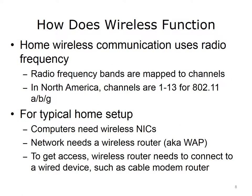How does wireless communication happen? Home wireless communication uses radio frequency. Wireless equipment uses different channels for communication, each channel representing a specific frequency band. Radio frequency bands map to specific wireless channel numbers. In North America, channels are 1 through 13 for the technologies governed by the IEEE 802.11a, B, and G standards. The following equipment is necessary to set up wireless communication in a home. Computers need wireless network interface cards, or NICs, to enable the connection to a wireless access point, or WAP, also known as a router.